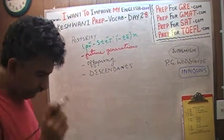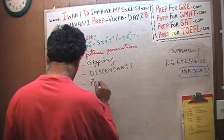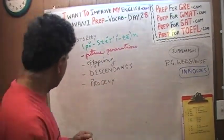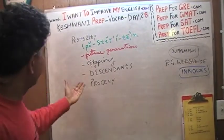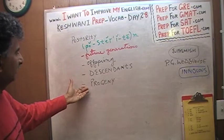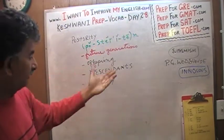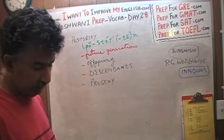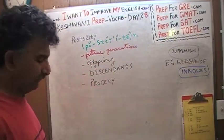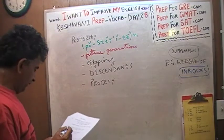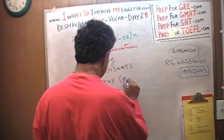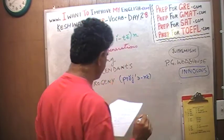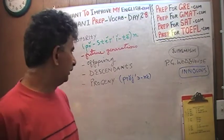Progeny. Progeny means exactly posterity, future generations. These are just good words to know, not just for these exams but also they are good words to know in general, but especially particularly for these exams. These are the kind of words that might crop up on GRE or GMAT or SAT, but you are not likely to see this kind of word on TOEFL obviously. Progeny is the word, which just means future generations, posterity, descendants, offspring.